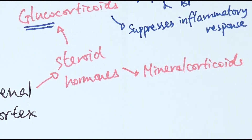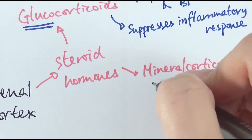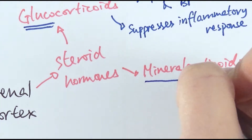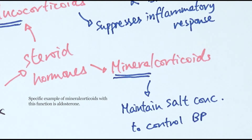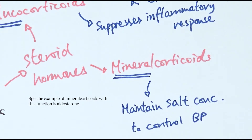Another type of steroid hormones produced by the adrenal cortex is called mineralocorticoids. Thinking about the prefix 'mineral' — minerals can also be called salts. So mineralocorticoids are the ones that maintain the salt concentration in your bloodstream to control blood pressure as well.